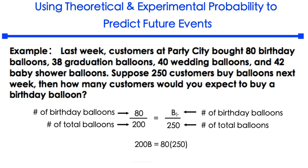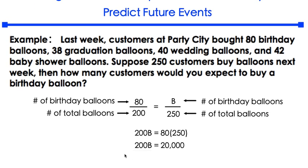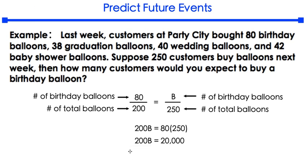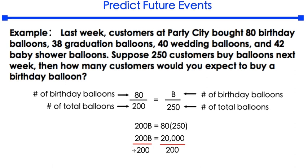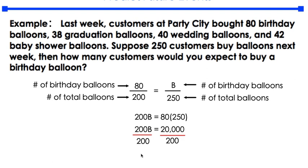200 times B is 200B. 80 times 250 gives us 200B equals 20,000. In order to solve for capital B, you'll have to divide both sides by 200. Capital B, when you solve, will be 100 birthday balloons.